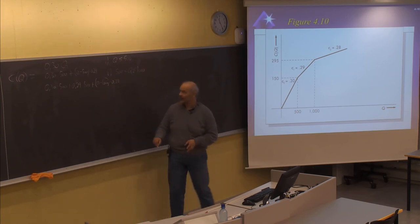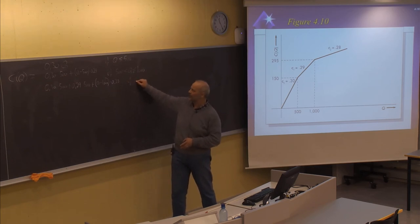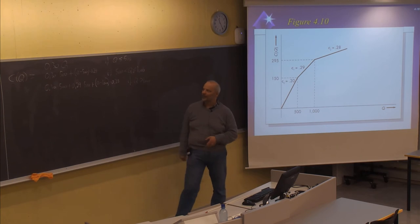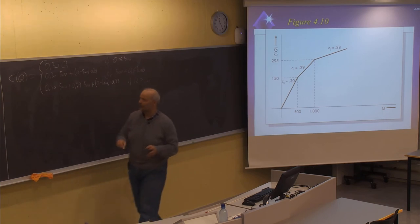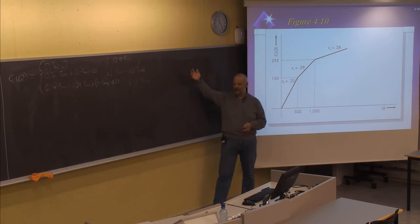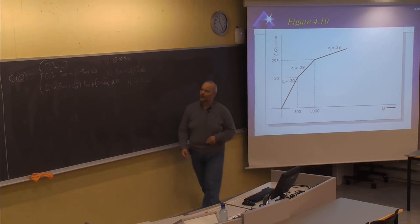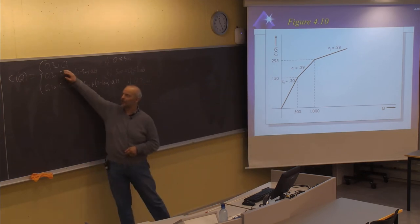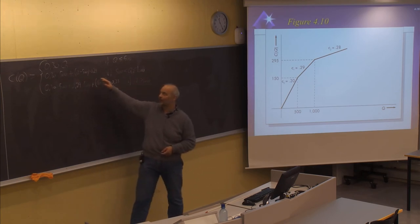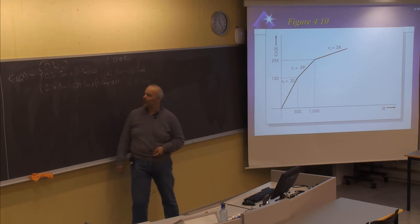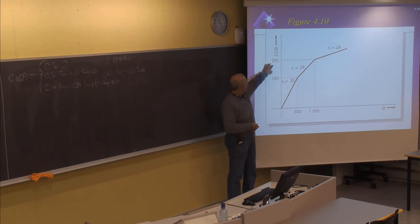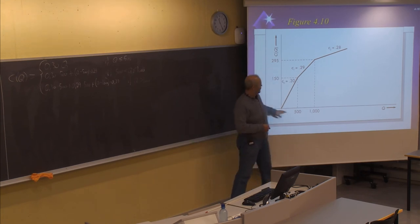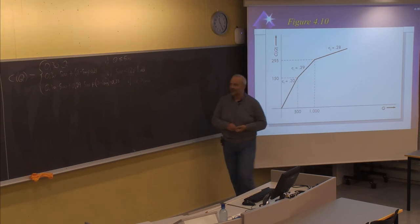This is the case if Q is larger than 1000. So now we have three options for the costs at different values of Q: either you pay 30 cents for all; or 30 cents for the first 500 and 29 cents for those exceeding 500; or a total of 295 for the first 1000 and 28 cents for those exceeding 1000.